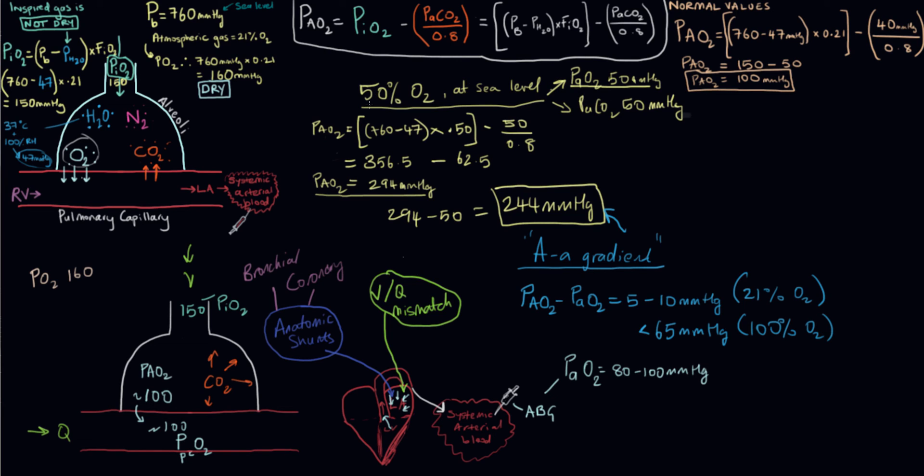This person's breathing 50% oxygen, so not quite 100, probably in between the two. Their AA gradient is 244 millimeters of mercury. That's an enormous AA gradient. That tells us that gas exchange is not taking place in a normal way. They had a PiO2 of 356, and their PAO2 here was 294.